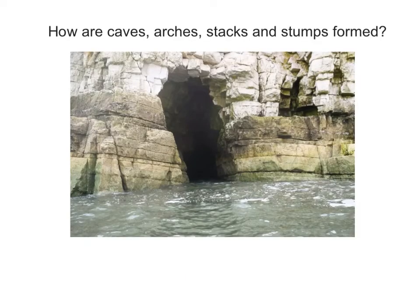Let's begin by looking at how caves are formed. In a cliff face you will see natural lines of weakness. Some of these are horizontal — these are called bedding planes — and sometimes they are vertical and they are called joints. Sometimes when you have a very long vertical crack, these are known as fault lines. These fault lines, which are natural lines of weakness in a cliff face, can be eroded further by processes of hydraulic action during high tide when the waves have most energy, and these cracks can widen and become deeper to create a cave.